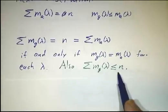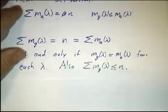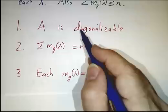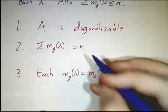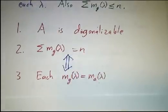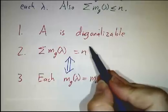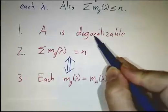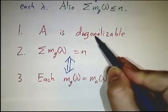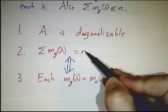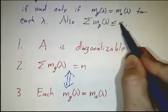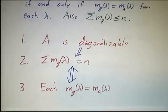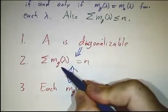The sum of the geometric multiplicities can never be bigger than n. So, remembering the three criteria: something is diagonalizable if and only if the sum of the geometric multiplicities is n, which occurs if and only if each geometric multiplicity equals its algebraic multiplicity. We've just shown that these two conditions are equivalent. To finish the proof, we need to show that the first two conditions — diagonalizability and sum of geometric multiplicities equaling n — are also equivalent.